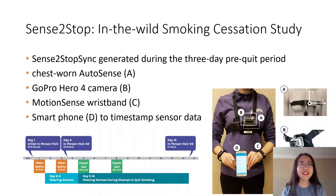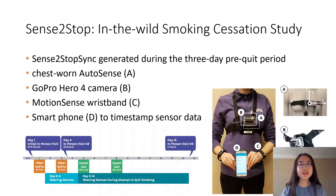We collected a dataset during a small case session study. In this study, the wearable devices included a GoPro video camera strapped to the participant's chest, an accelerometer from the chest-worn sensor suit AutoSense, and two accelerometers from the MotionSense wristband. Accelerometry data are synchronized to the phone clock, while videos are stored locally with a separate unsynchronized clock.